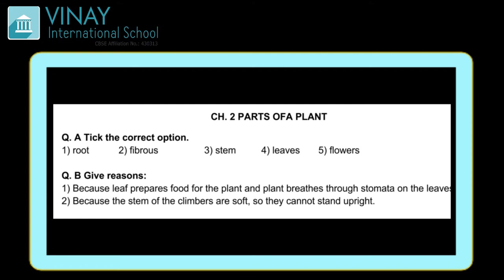Fourth: dash help a plant to breathe. Plant ko breathing karne mein kaun help karta hai? Stomata — aur stomata kahan hota hai? Leaves par. So the right answer is leaves. Fifth: dash are the most beautiful part of a plant. The most beautiful part of course is flowers, so the right answer is flowers.